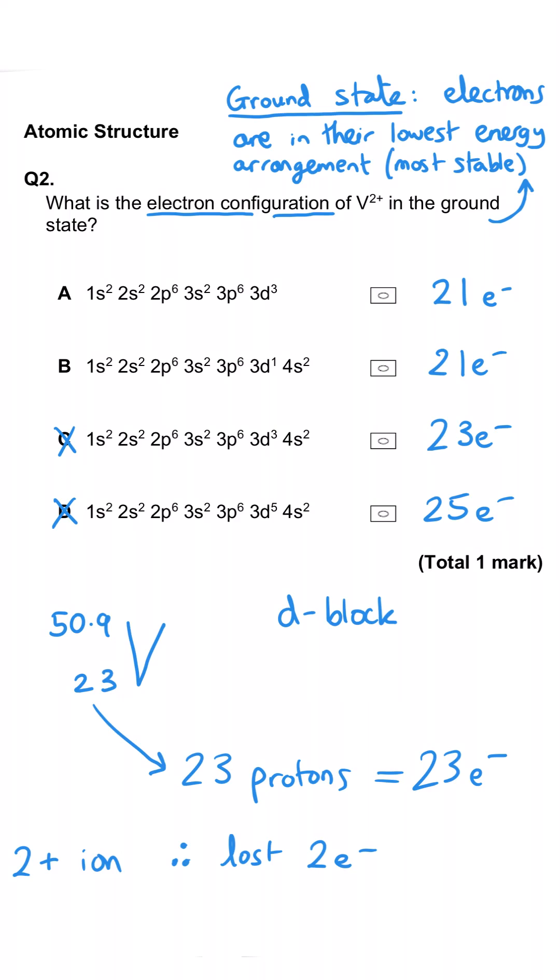Then we have to remember that the D block elements lose their S electrons before their D electrons. And so B is wrong because it should have lost those 4S electrons first. And that means that A is the correct answer because it still has all of its 3D electrons.